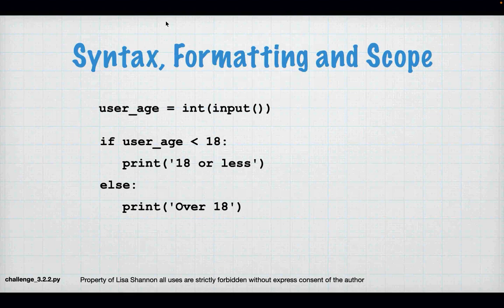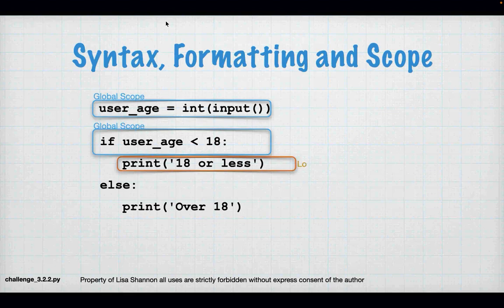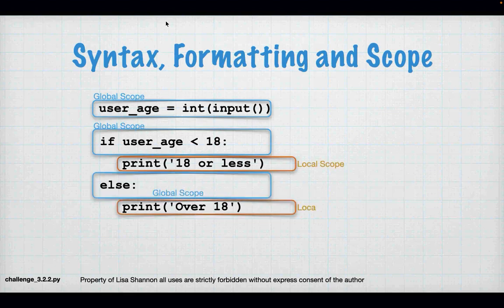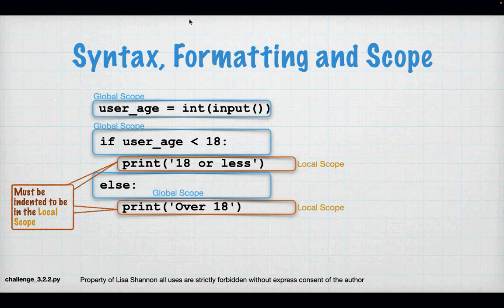Let's talk about syntax. The global scope is anything lined up on the left-hand side — it is not indented, no spaces. You start at column zero and just start typing. That doesn't work with local scope. Everything in the global scope is just like we've done, and the if statement itself is in the global scope.